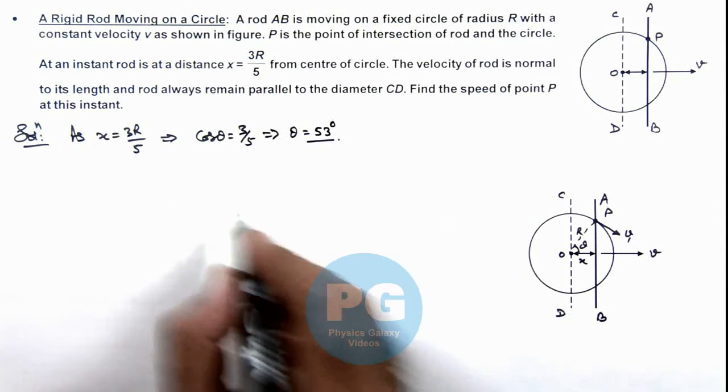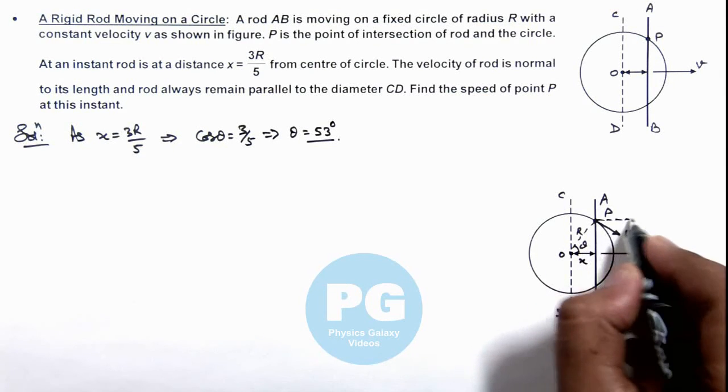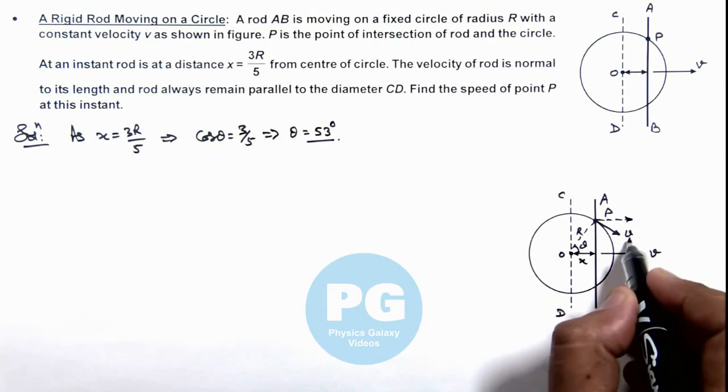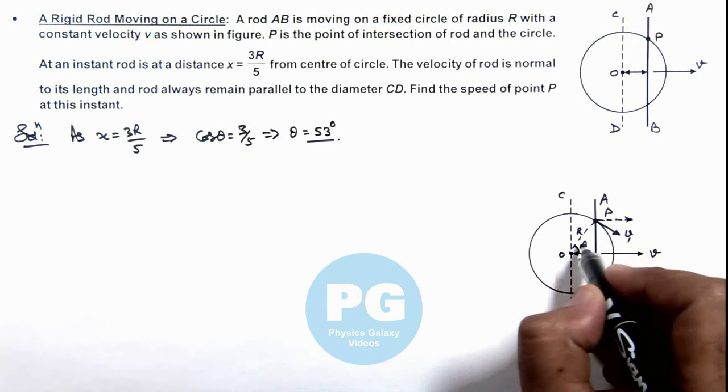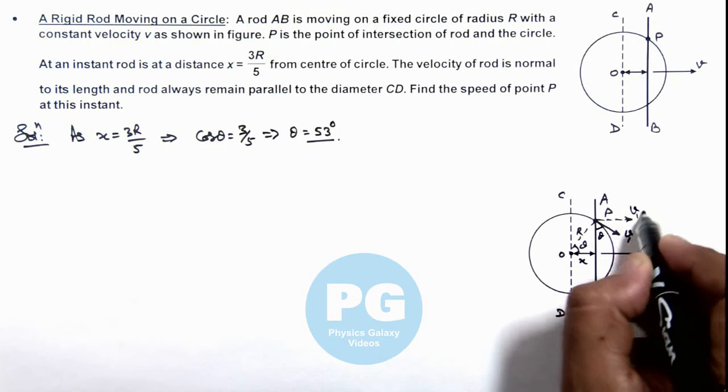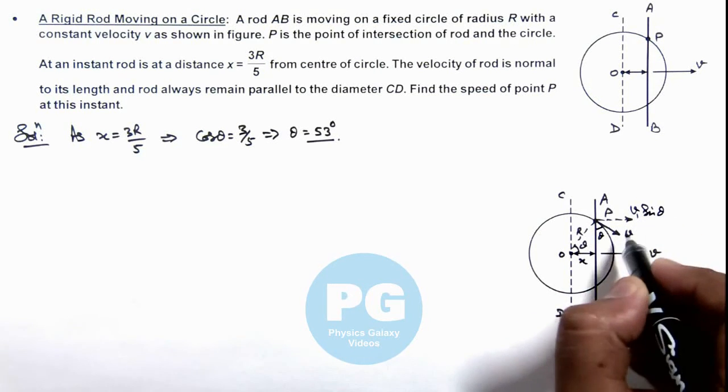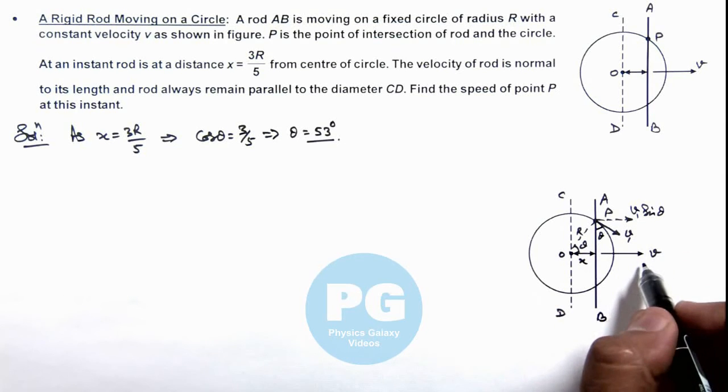Now in this situation, point P must move in such a way that the component of this speed v1 in the direction the rod is moving, if this angle is theta, this component is v1 sine theta. As per the rules of constrained motion of this point P, v1 sine theta must be equal to v.